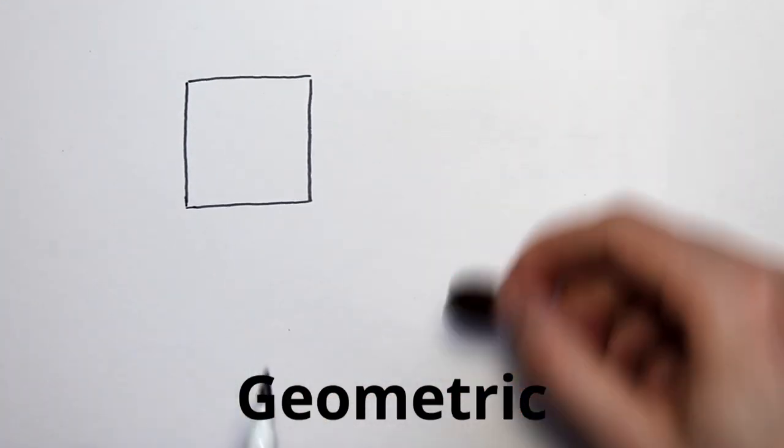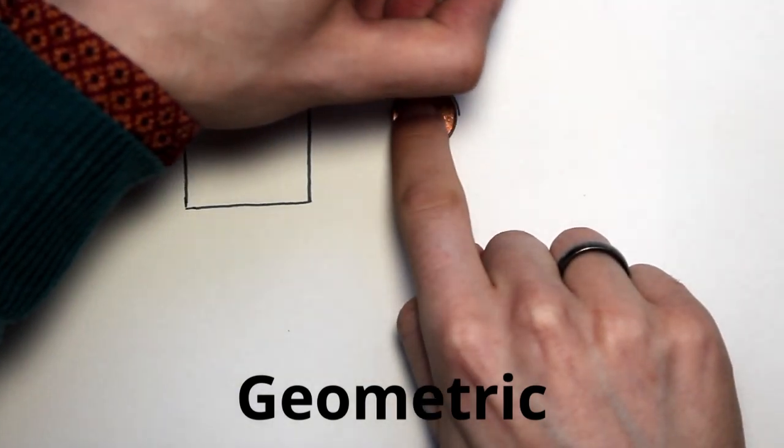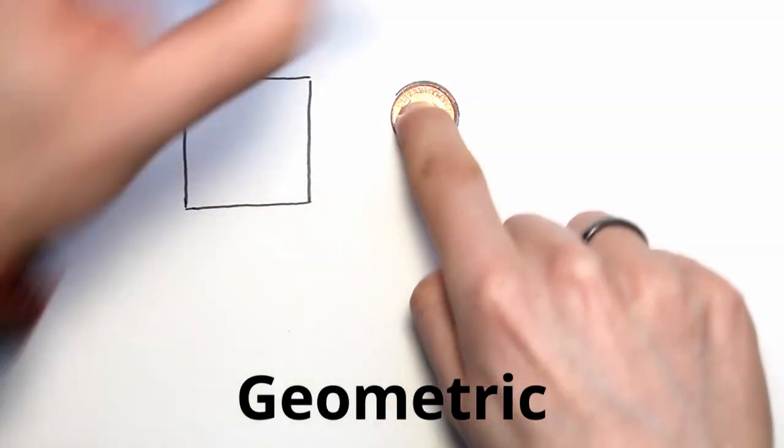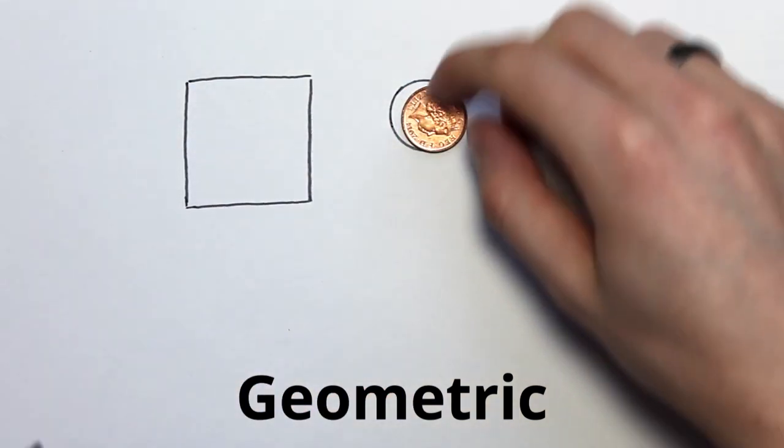Circles are a bit of an exception in the world of shapes. Circles can be defined mathematically—they're defined by the number pi. However, unlike most geometric shapes, which have sharp straight edges, circles have curved edges.